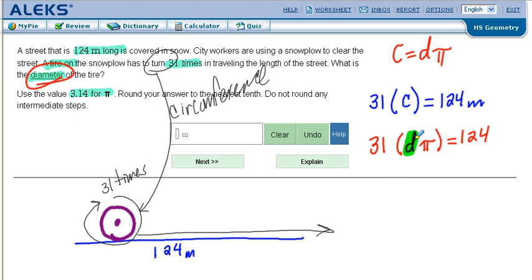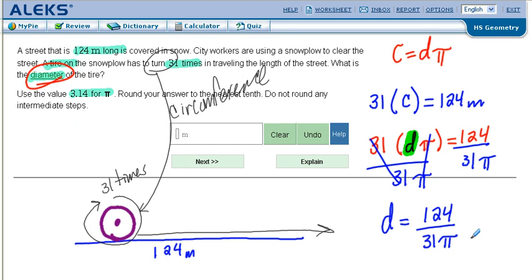We're being asked to find the diameter, so we isolate the diameter. We're going to do that by dividing by 31 pi. That gets rid of both the 31 and pi. So to solve for the diameter, we're going to go 124 divided by 31 times 3.14.